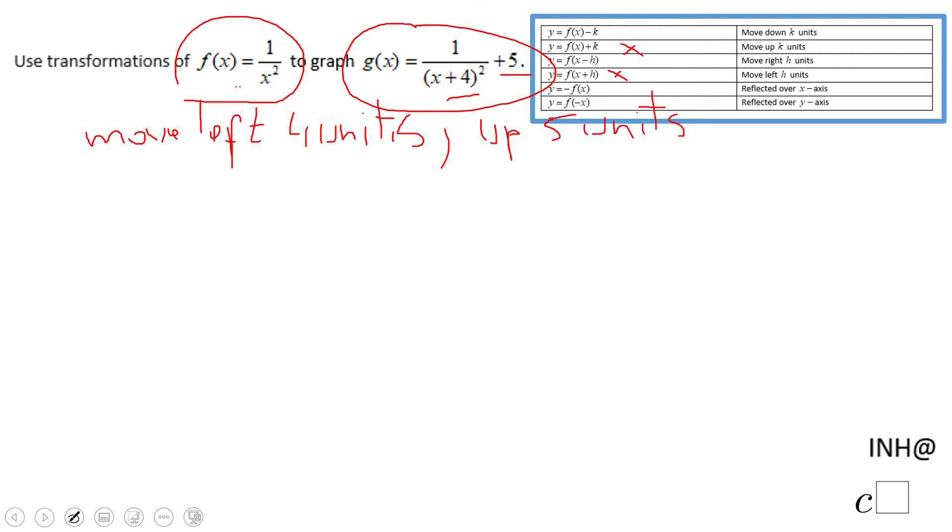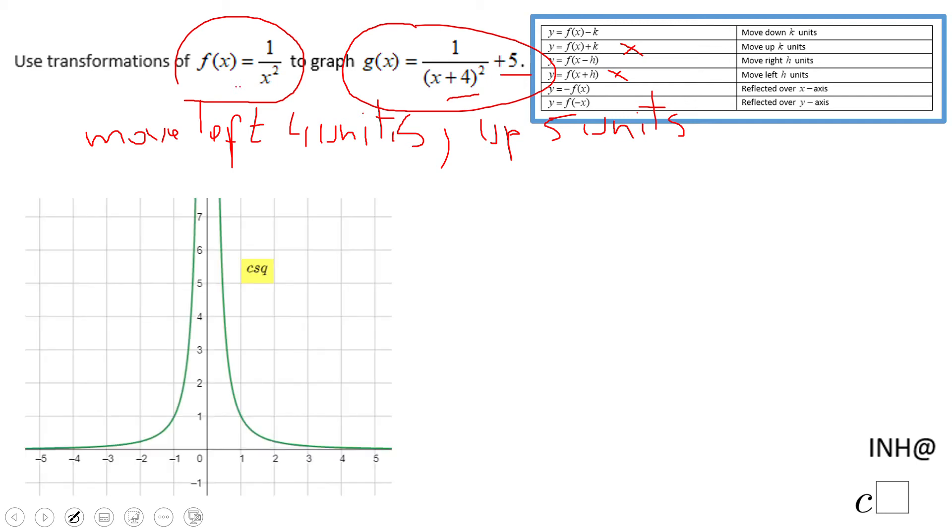Okay so the graph of g(x) is the same as f(x), the only difference is move left four units and up five units. So now let's take a look a little bit on the graphs and you see this is the parent graph.